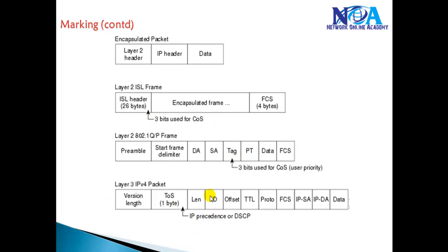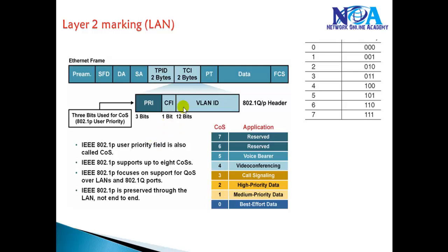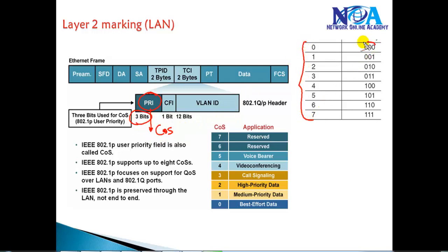For Layer 2 marking, if you are using dot1Q encapsulation, you have a priority bit field that is three bits wide. Those three bits define the Class of Service (CoS) value. With three bits we get eight different combinations: values zero through seven. Zero is best effort data — essentially no marking — where the device will try its best to forward the traffic.